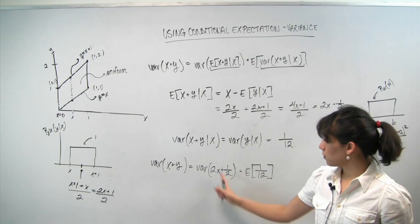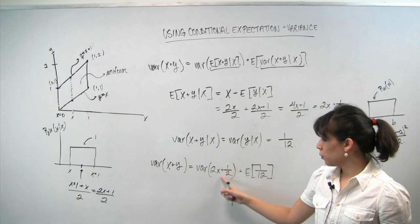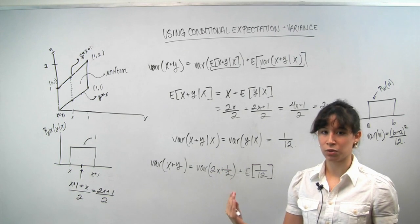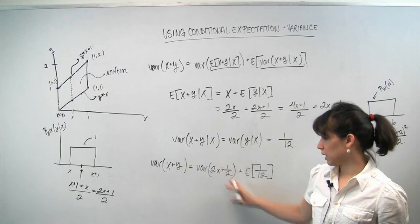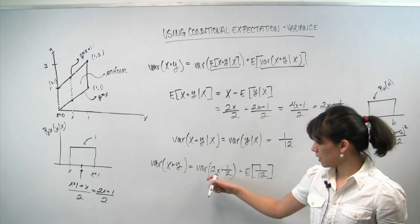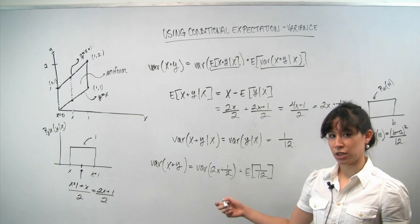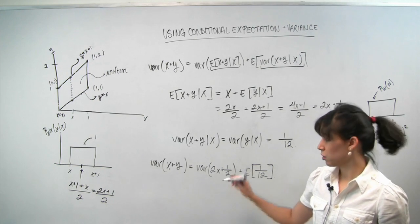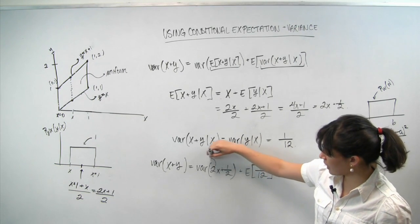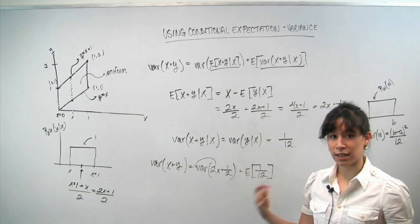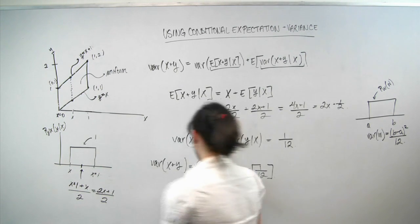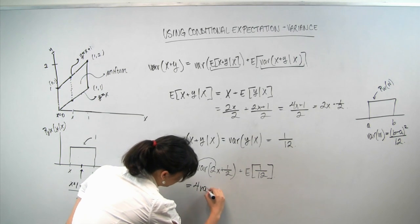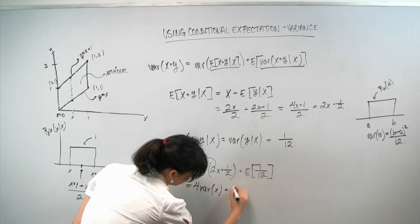So similar to our discussion up here, we know constants do not affect variance. They shift your distribution, they don't change the variance. So we can ignore the 1 half. This scaling factor of 2, however, will change the variance. But we know how to handle this already from previous lectures. We know that you can just take out this scaling factor as long as we square it. So this becomes 2 squared, or 4, times the variance of x plus 1 twelfth.